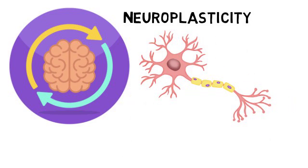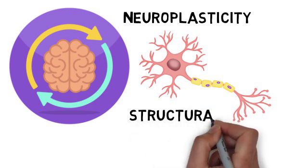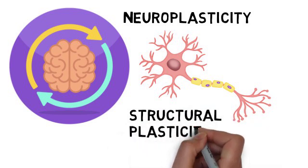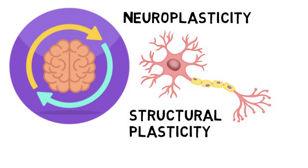Structural plasticity involves changes in the physical structure of neurons. This can include the growth of new dendrites and axons, which enhances the brain's ability to form new connections and strengthen existing ones.